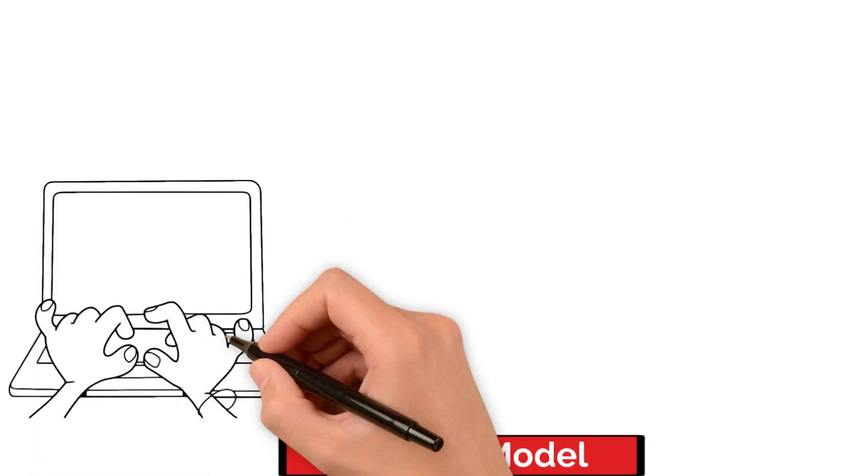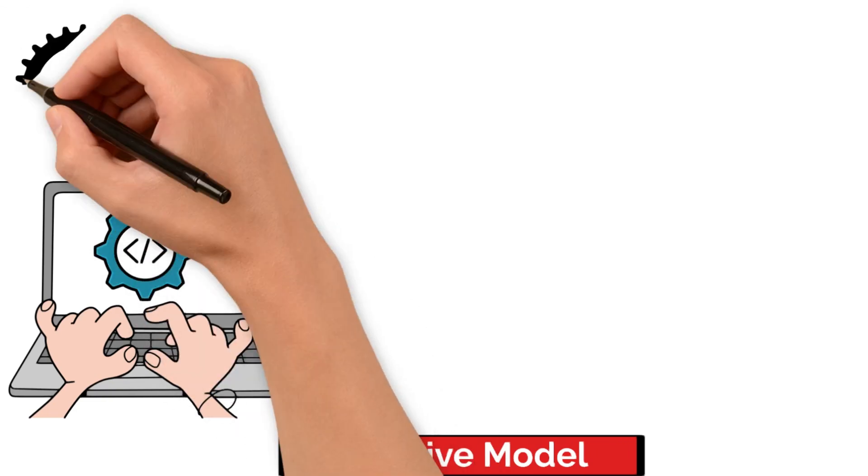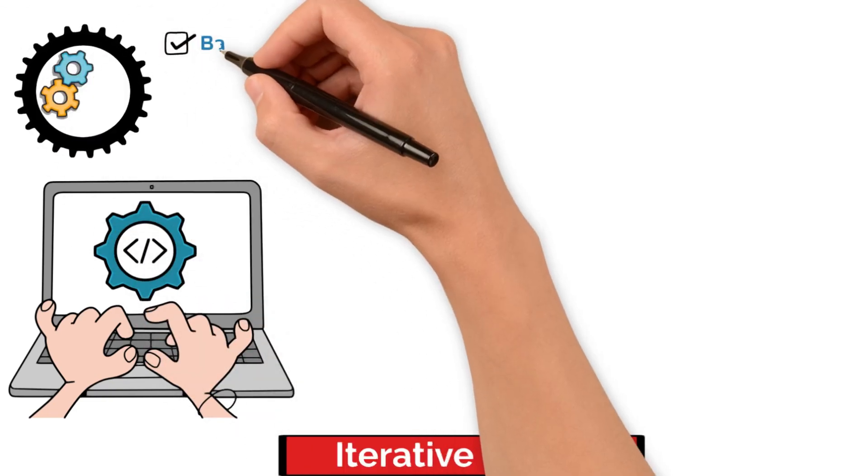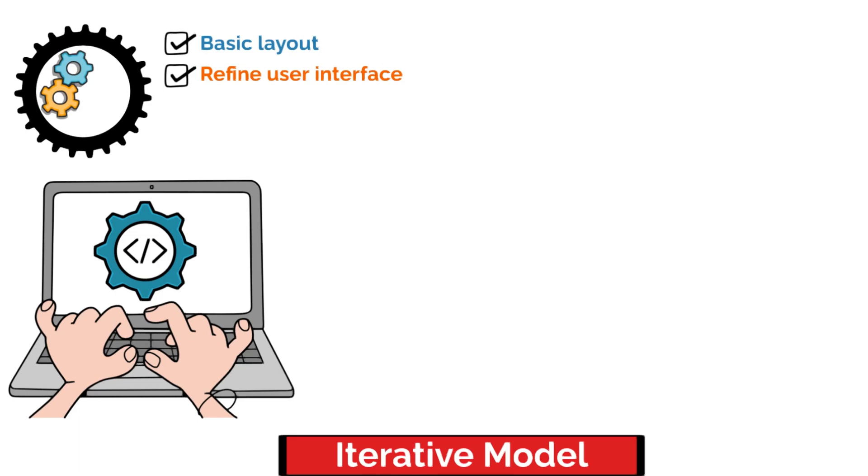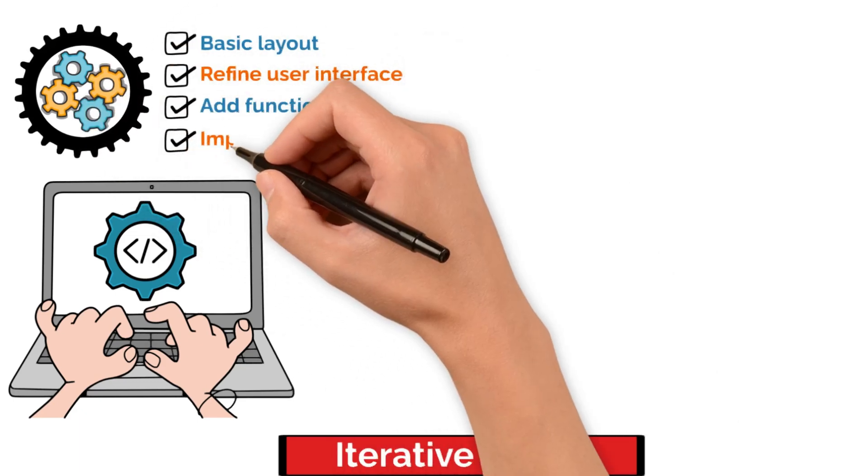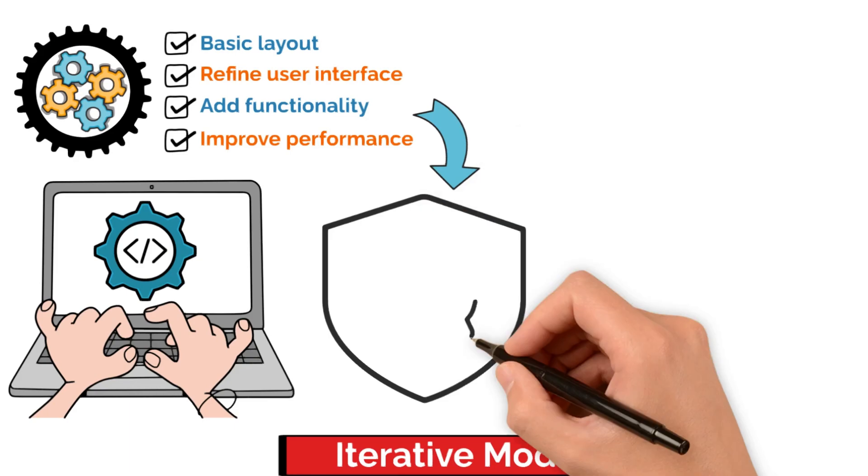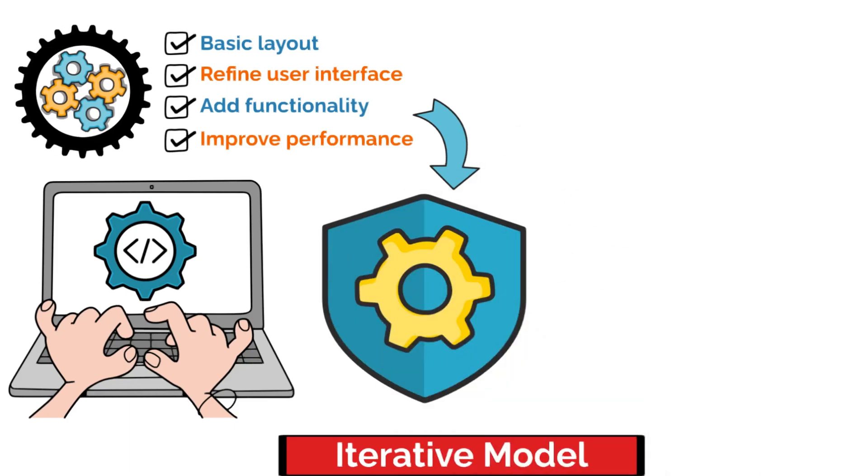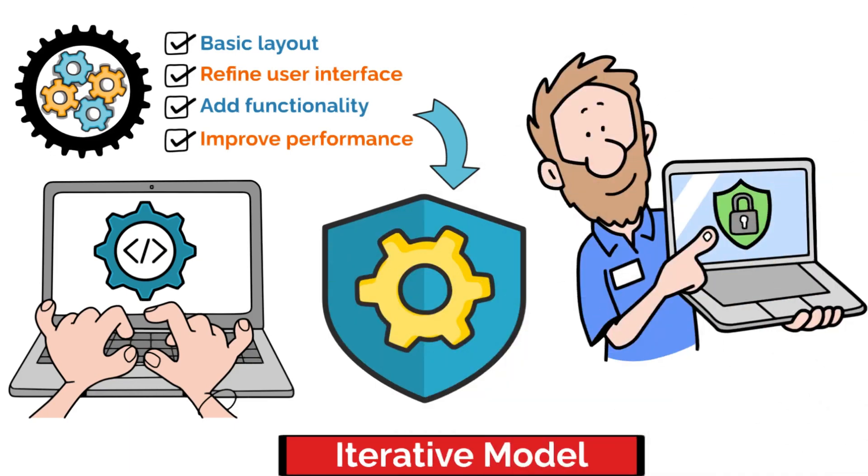Imagine you're developing a new software feature iteratively. Your first version might just have the basic layout. As you go through each cycle, you refine the user interface, add functionality, and improve performance until the feature meets all expectations. Each iteration builds on the previous one, so the product grows into the final version rather than arriving in chunks.